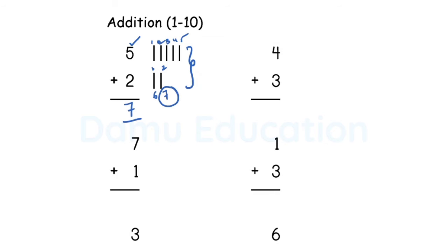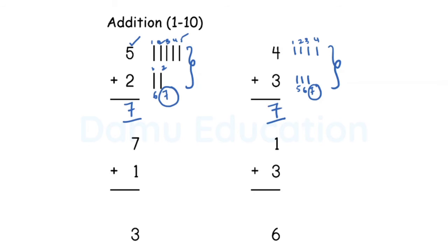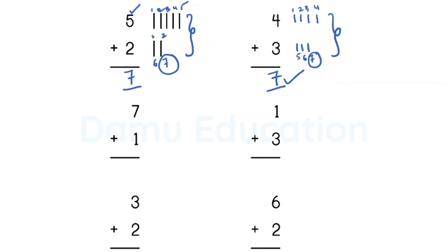Next, four plus three. First draw four lines: one, two, three, four. Then draw three more lines for the three. Count all the lines completely — one, two, three, four, five, six, seven. The final answer is seven. You just need to write the answer; no need to write the individual numbers.